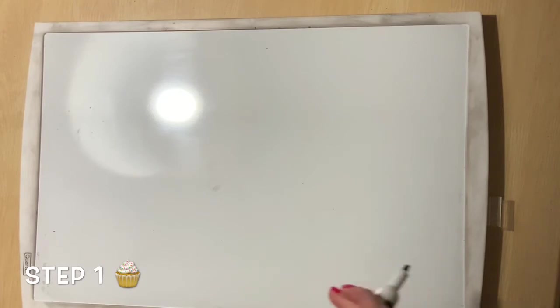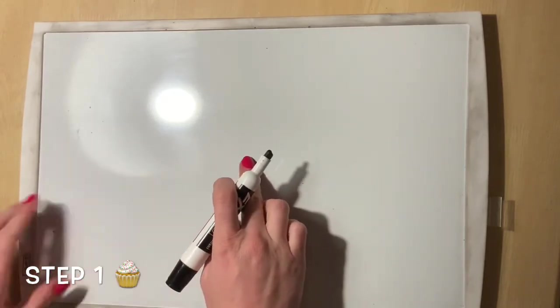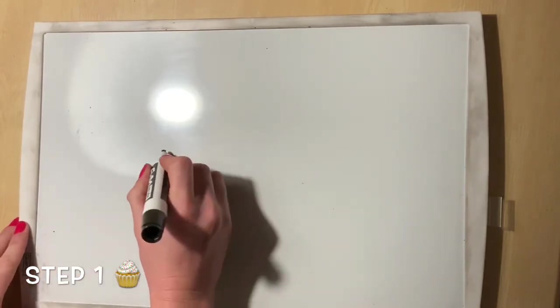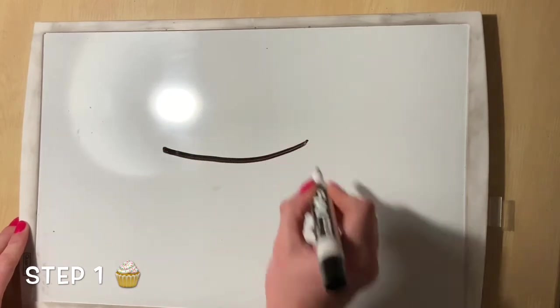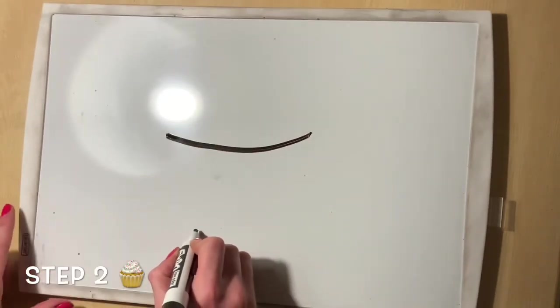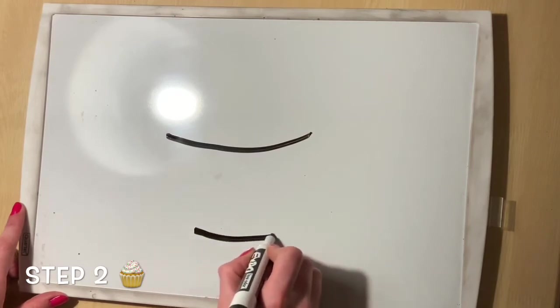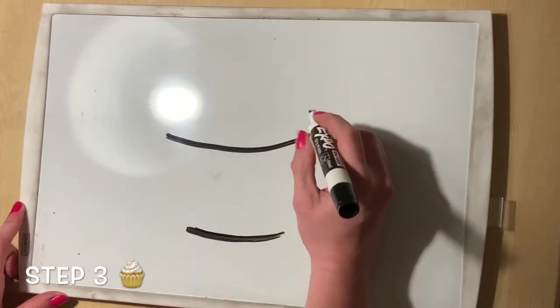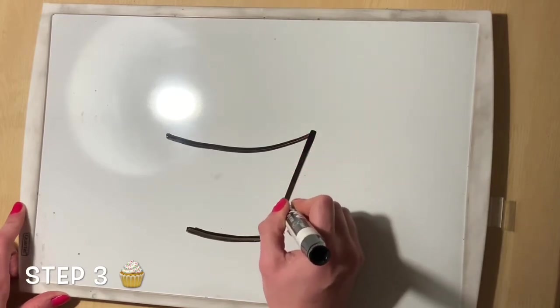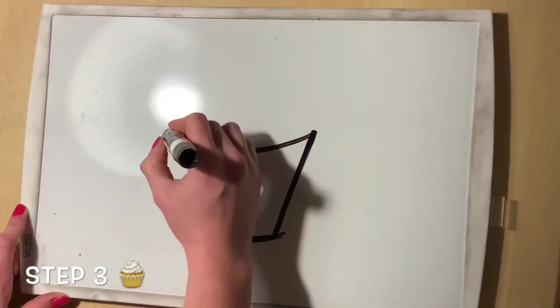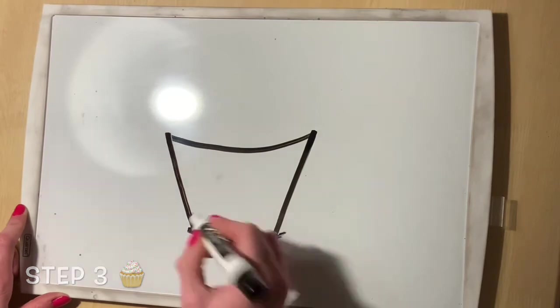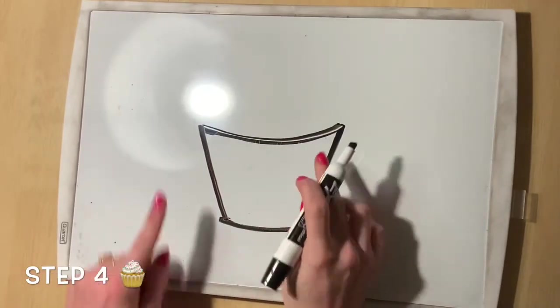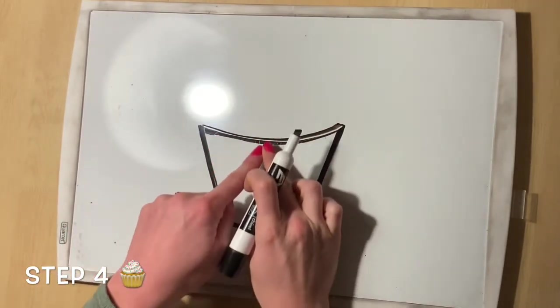Step one is to draw a smile. Make sure your smile line is nice and curved. After that, draw a shorter smile underneath with space in between. Then draw two lines that connect both smiles to create the cupcake holder.